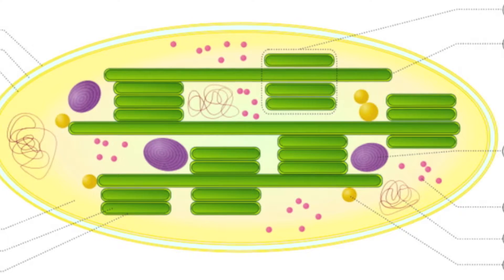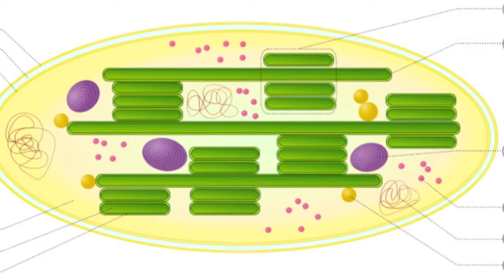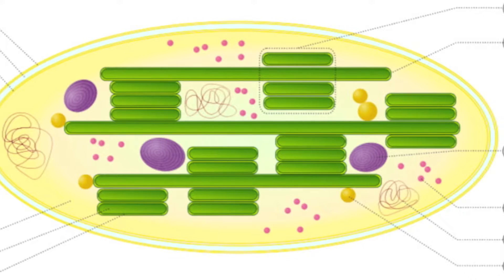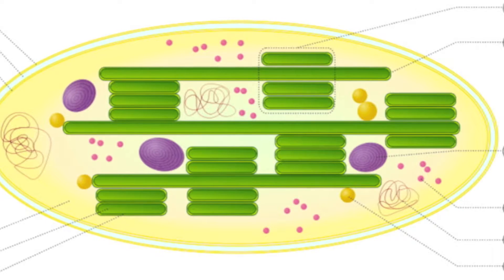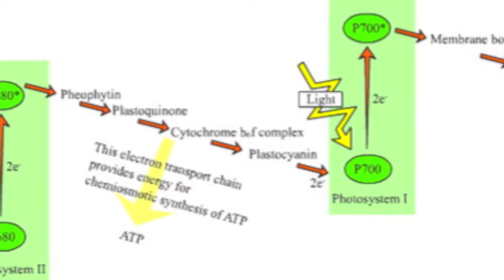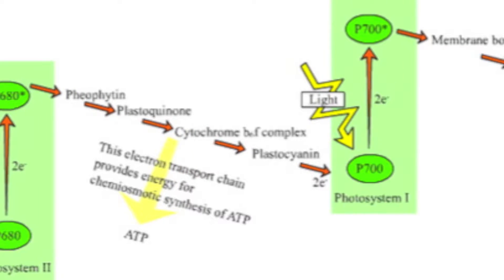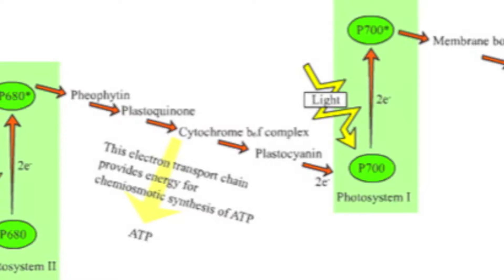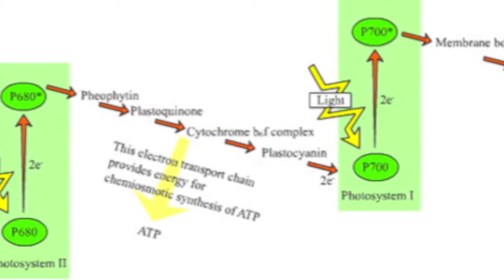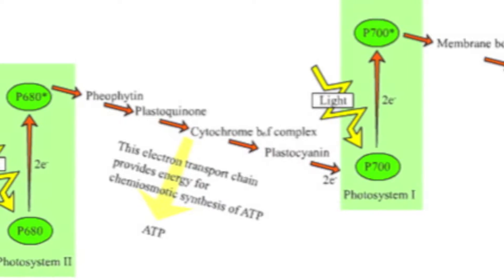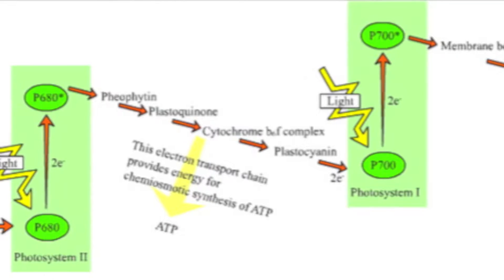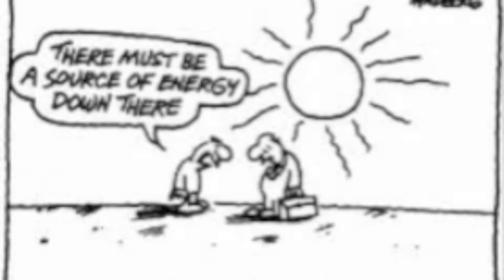Electrons move to PS1, receiving ATP. Chlorophyll A reduces NADP+ to NADPH. NADPH and ATP supply the energy for the light-independent Calvin cycle — that's the next step.